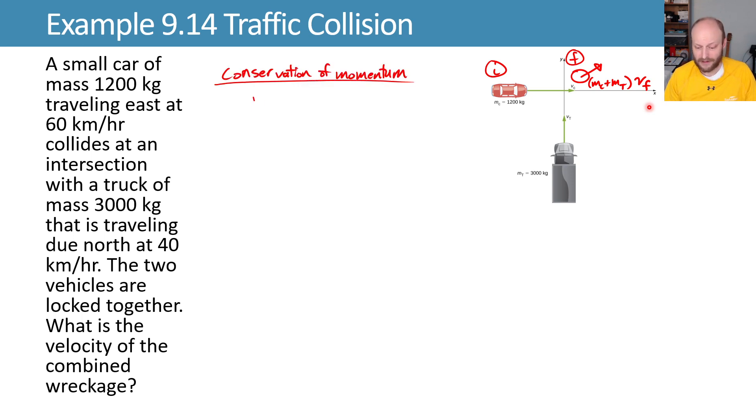We'll conserve momentum because all of the interactions are internal to our system. And then we'll write that in terms of our system parameters. Initially, we have the mass of the car times its velocity plus the mass of the truck times its velocity. And finally, we have their combined masses times that final velocity.